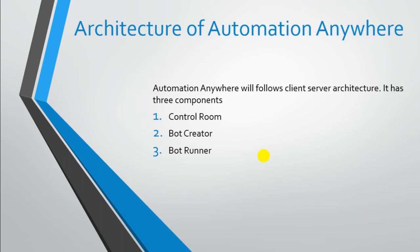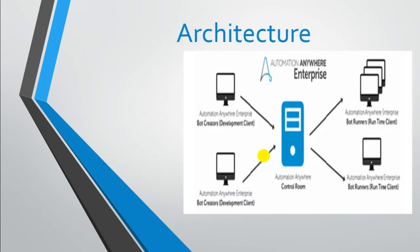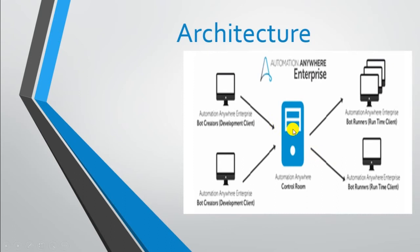Looking at the architecture diagram of Automation Anywhere, the blue component is the Control Room, which acts as a server. On one side you can see the Bot Creators and on the other side you can see the Bot Runners. These are integrated with the Control Room, so both Bot Creators and Bot Runners are maintained from the Control Room.